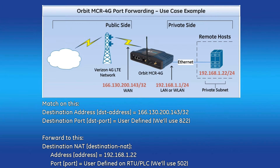In this example, the destination address entered is the Orbit MCR4G's WAN interface, or cell IP, followed by the listening port of your choosing. I'll also match on TCP packets. The second set is the forwarding criteria. Any IP packet that meets the match criteria will be forwarded on using the destination NAT settings. The forwarding address is the remote host 192.168.1.22 and its port 502.